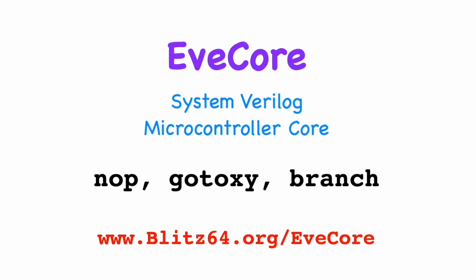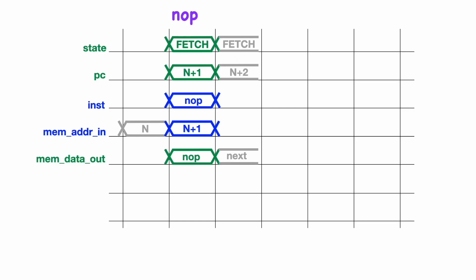This video is part of a series in which we describe how to implement a simple microcontroller core in SystemVerilog. In this video, I'll be going over the timing and the Verilog code for the NOOP instruction, the indirect jump instruction, and the conditional branch instruction.